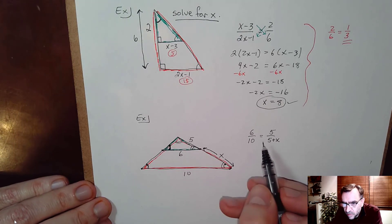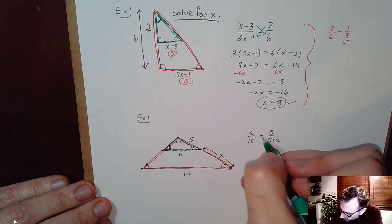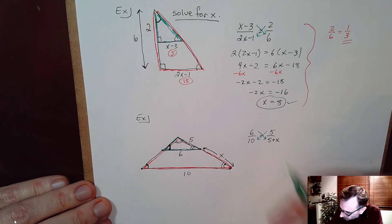Alright so that's our setup. That's the proportion that we need to solve. And again from there to solve this we just do the cross multiplication.